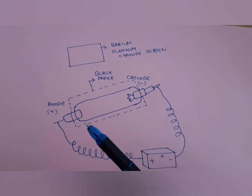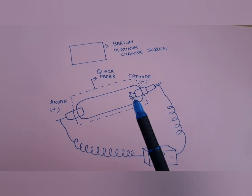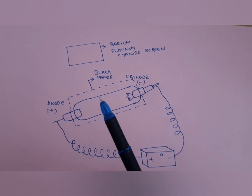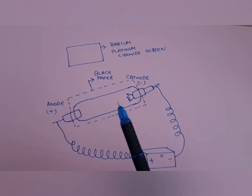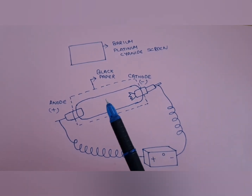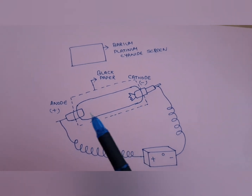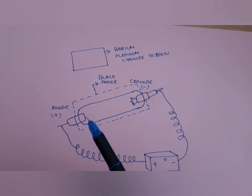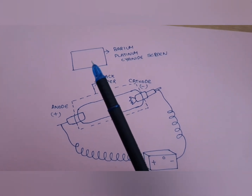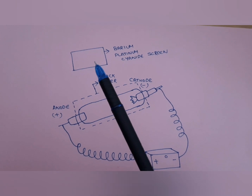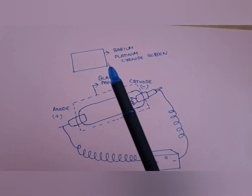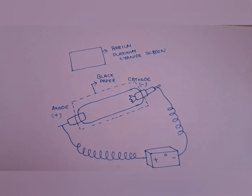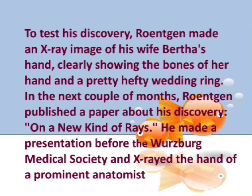These electrons are accelerated towards the anode with the help of electric current. The electrons strike the walls of the glass tube and cause fluorescence. A vacuum condition is maintained inside the tube to avoid collision of electrons with air particles. Even after covering the tube with black paper, Röntgen observed fluorescence in the barium platinum cyanide screen, leading him to think there was another mysterious ray capable of passing through the black paper.